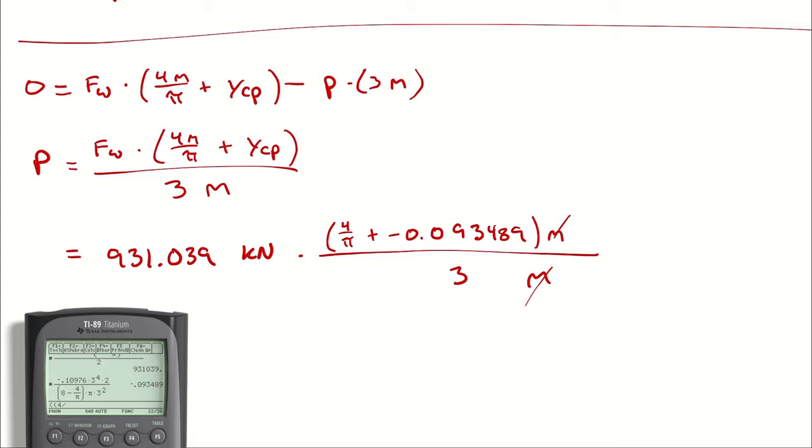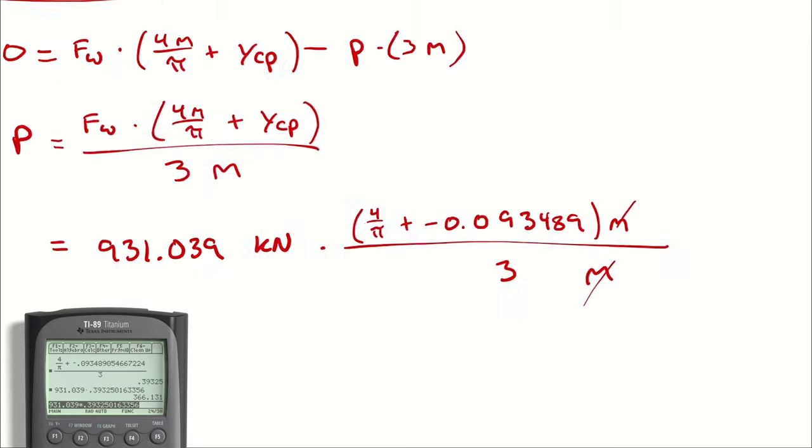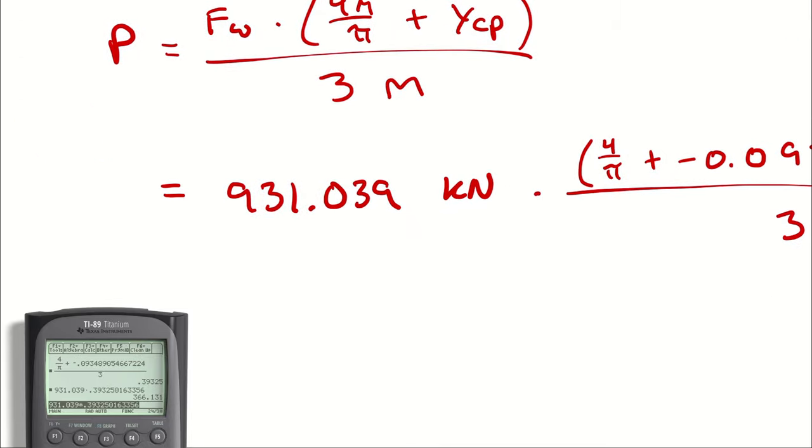Divided by three meters so meters cancels meters I'm left with a proportion that we are multiplying by our force and that proportion is four over pi minus 0.093489 divided by three. So that number is a little over a third, so we are benefiting by the lever arm that this gate is acting as assuming for the moment that we want to minimize the required force to hold the gate shut. Anyway 931.039 times this proportion we get 366.131.